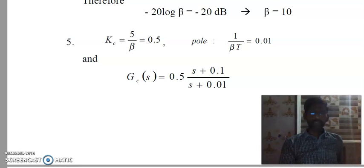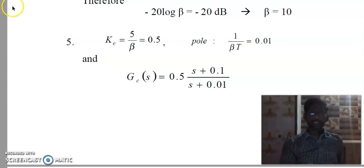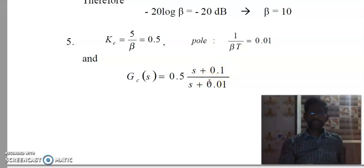The fifth point is Jc equal to 5 by beta, 3 equal to 0.5, so the pole is 1 by beta T equal to 0.01. So the compensated Jc of S equal to 0.5 into S plus 0.1, divided by S plus 0.01.